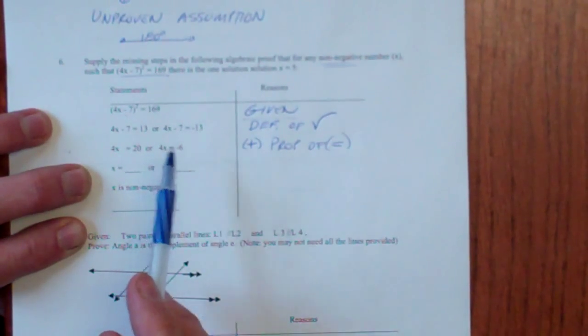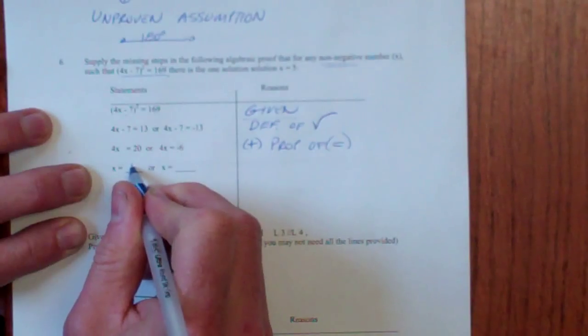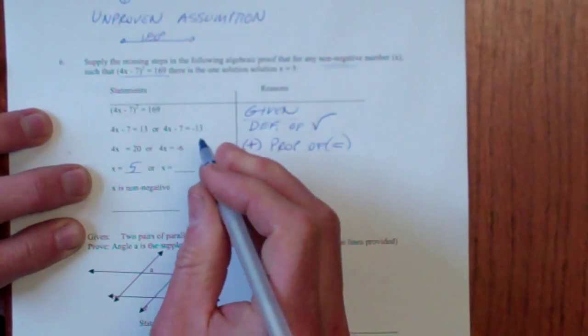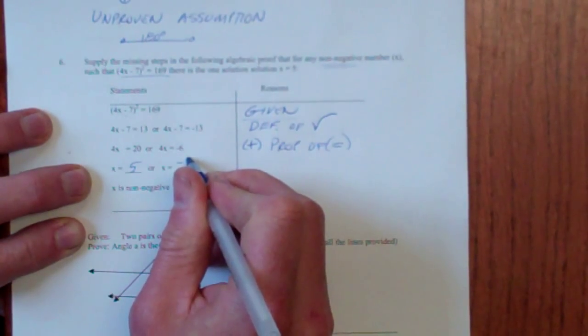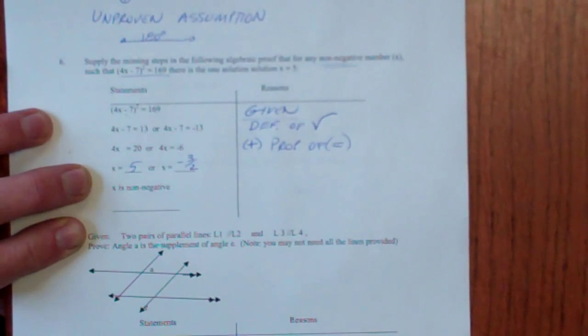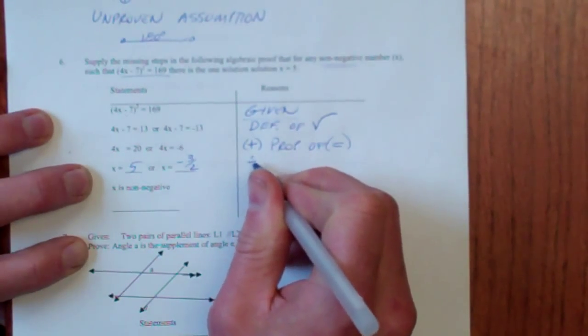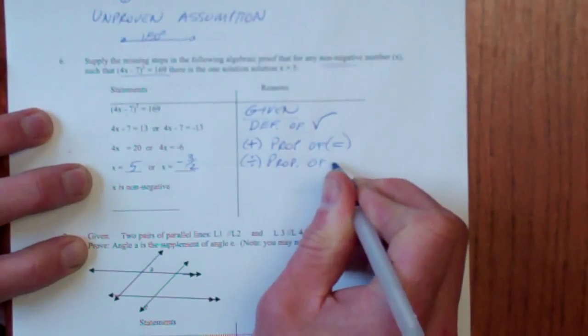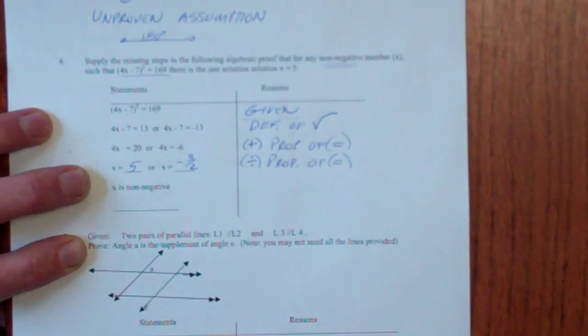Then, if I take and add 7 to both sides, I'll get 20 or I'll get negative 6. This is the plus property of equality. And that's a postulate. You can look it up. That's one of our things we can't prove. It's just a given true statement that we can add equal things. In this case, 7 to both sides.